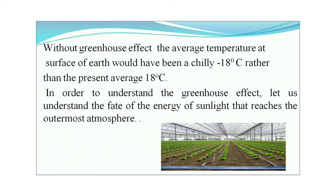Without the greenhouse effect, the average temperature at the surface of Earth would have been minus 18 degrees centigrade, rather than the present average of 18 degrees centigrade. In order to understand the greenhouse effect, let us understand the fate of the energy of sunlight that reaches the outermost atmosphere of our Earth.